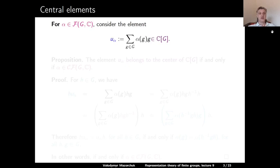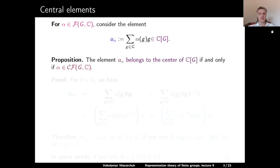For a function alpha from the group G to the complex numbers, consider the element which we denote by U_alpha. This is the linear combination of all elements in G with coefficients given by the function alpha, so this is an element from the group algebra of G. Proposition: the element U_alpha belongs to the center of the group algebra if and only if alpha is a class function for G.